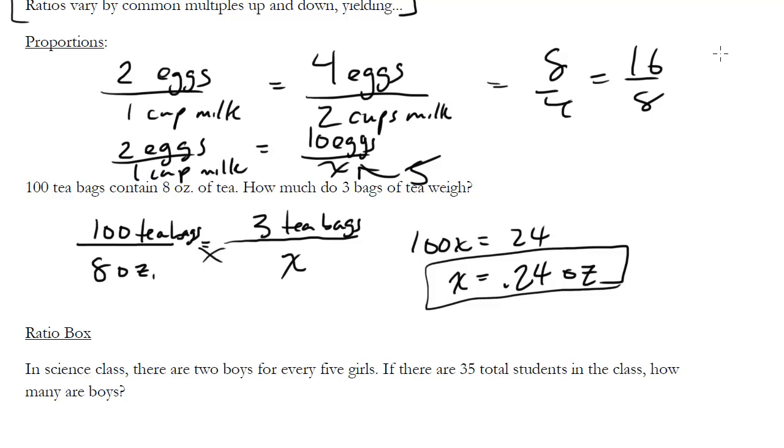One little aside, and we're going to talk about this with direct and indirect variation, but this proportion stuff is directly proportionate. There's another kind called indirectly proportional or inversely proportional. We'll talk about that in a little bit.